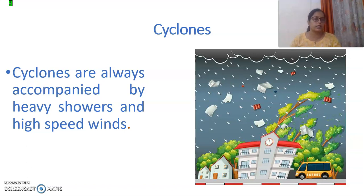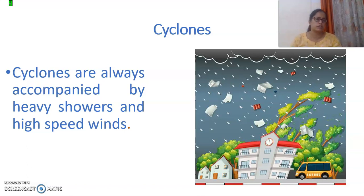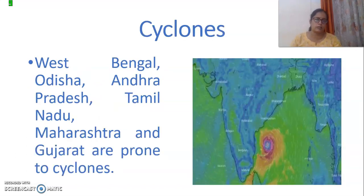So, whenever there is a cyclone, there are a lot of showers — heavy showers — that means very, very heavy rainfall as well as a lot of high-speed winds.